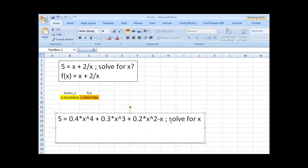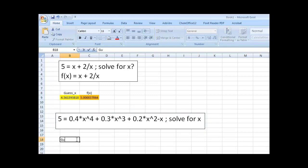So, 5 equals 0.4 times x to the 4th, plus 0.3 times x to the 3rd, plus 0.2 times x squared, minus x. What is x? And this again is just a simple goal seek problem. And I'm going to say, guess x. And then f of x.